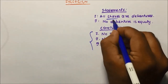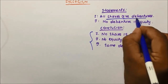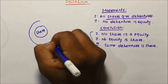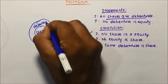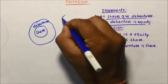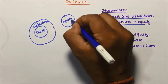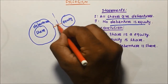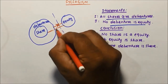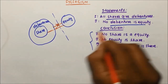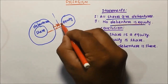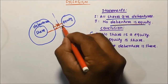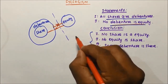Question number two has two statements and three conclusions. Let's draw the Venn diagram. Statement one: 'all shares are debentures' — all shares go inside debentures. Statement two: 'no debenture is equity' — there is no relation between debenture and equity. Since debenture has no relation with equity, share, being inside debenture, will also have no relation with equity.